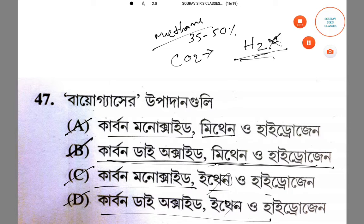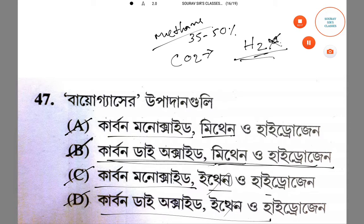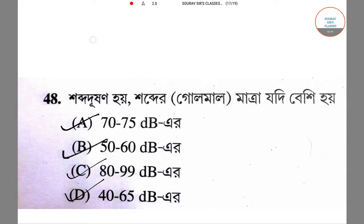The next question is about ocean noise levels. The answer is approximately 85 decibels, which is basically 85 decibels — the level considered harmful to hearing.